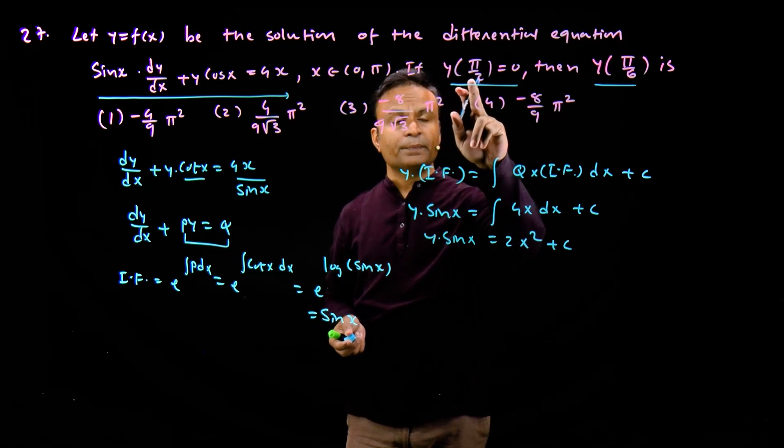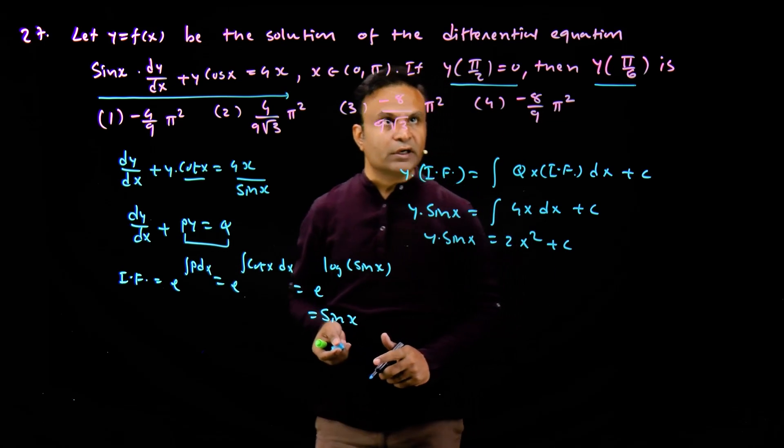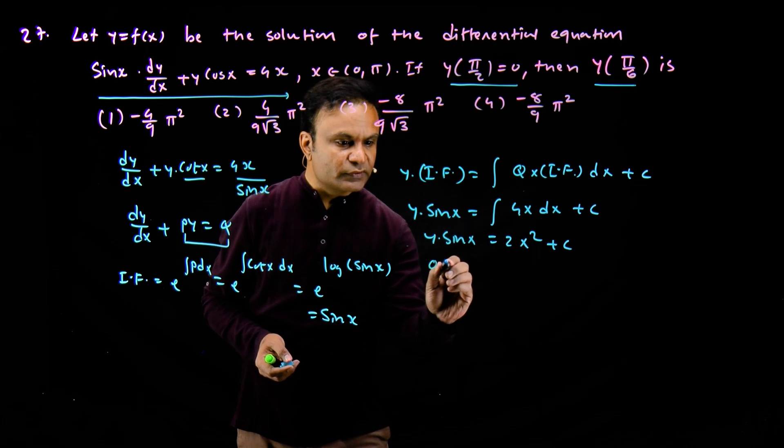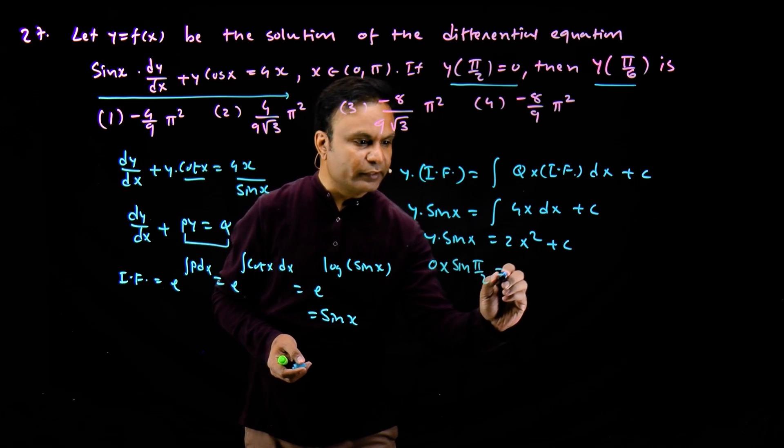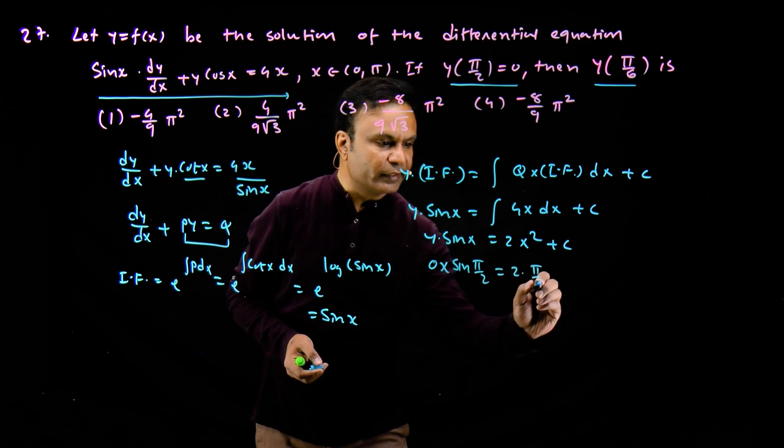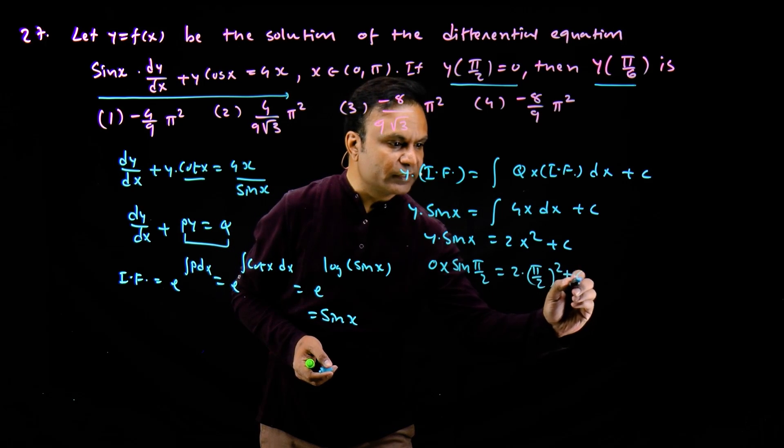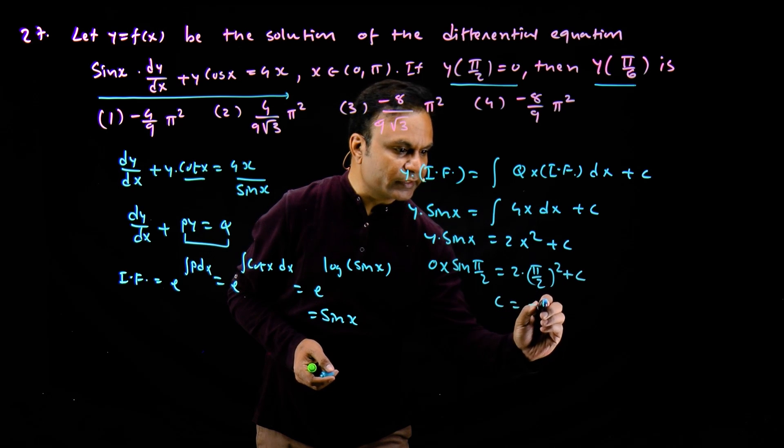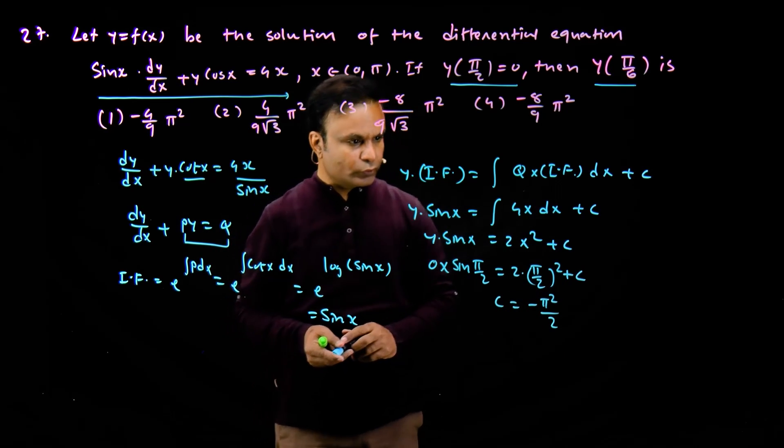Because we have one data given: when x is pi by 2, y will be 0. So this is 0 multiply by sin pi by 2 is equal to 2 multiply by pi by 2 square plus c. So the value of c becomes minus pi square upon 2.